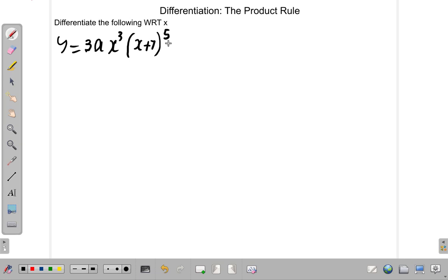So, let's just use the product rule. What we have is y equals 3ax³ times (x+7)^5. And we need to differentiate the following with respect to x.